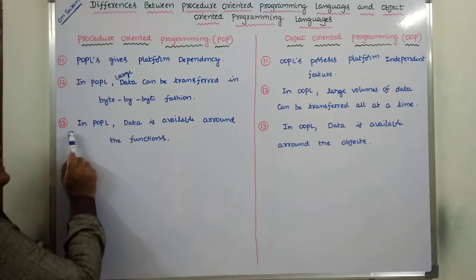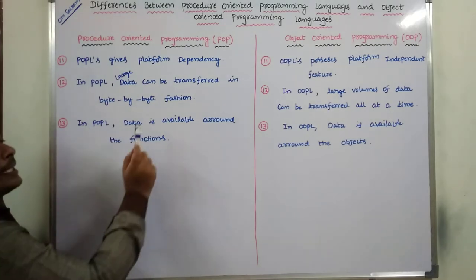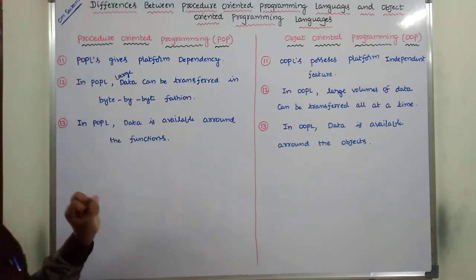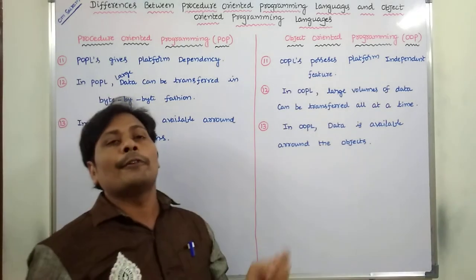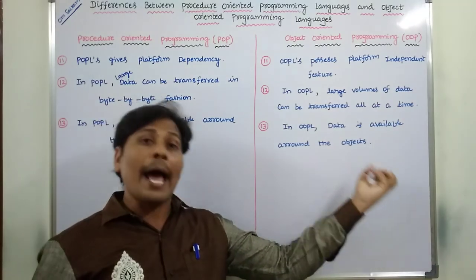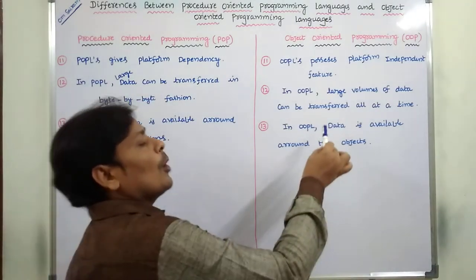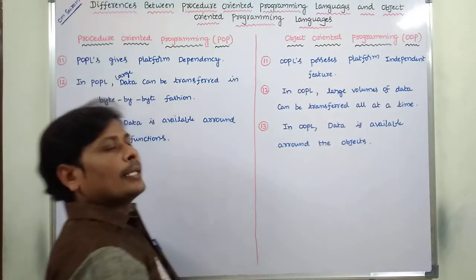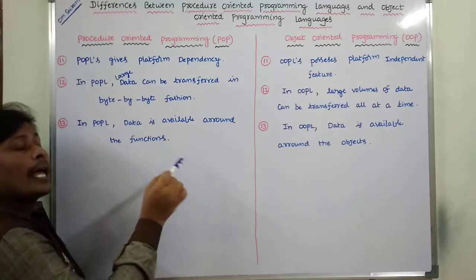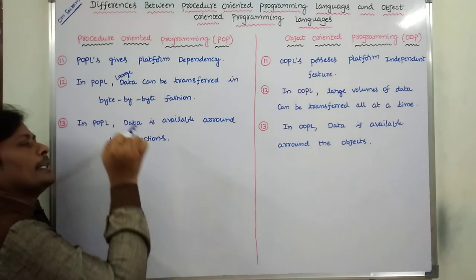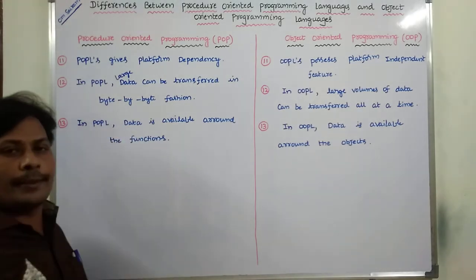In POPL, data is available around the functions — the whole programming paradigm depends on functions. In OOPL, data is available around the objects, because OOPs only depends on objects.